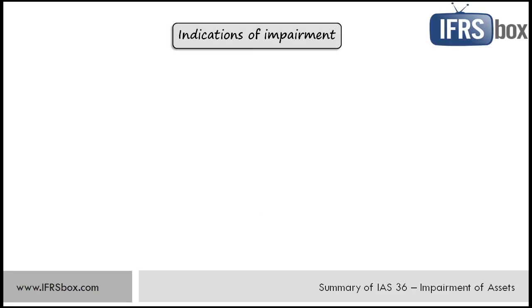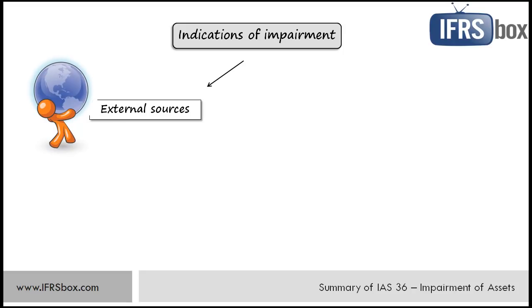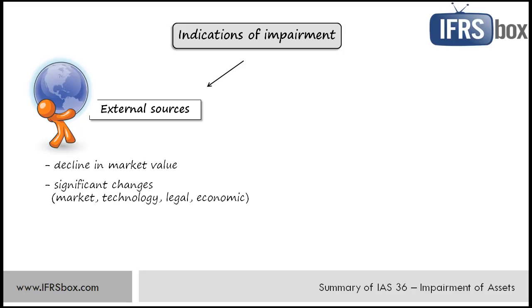When assessing indications of impairment, first look to external sources. If during the financial period an asset's market value has declined significantly more than would be expected as a result of the passage of time or normal use; significant changes with adverse effect have taken place or will take place in the near future — for example technological, market, economic or legal changes; market interest rates or other rates of return on investments have increased during the period and such an increase might affect the discount rate used in calculating asset's value in use; or the carrying amount of the net assets of the entity is higher than its market capitalization.